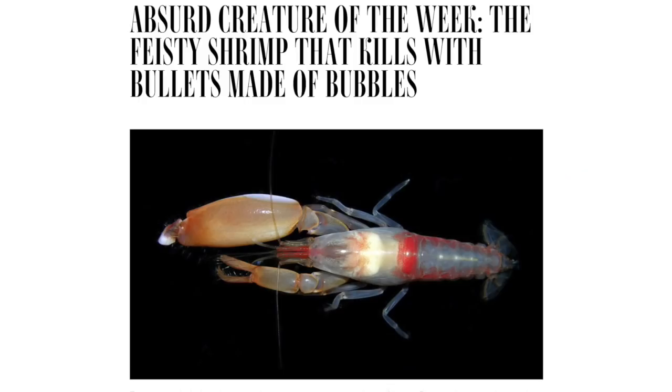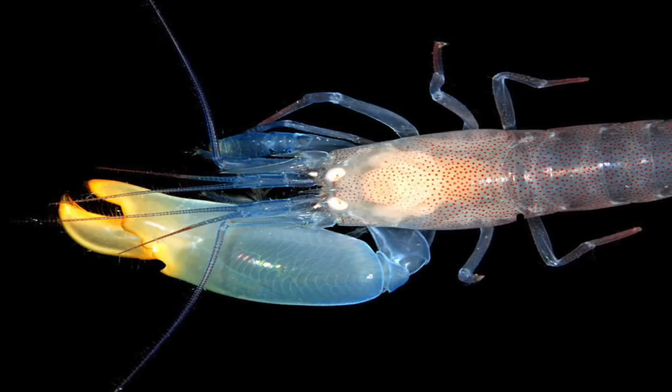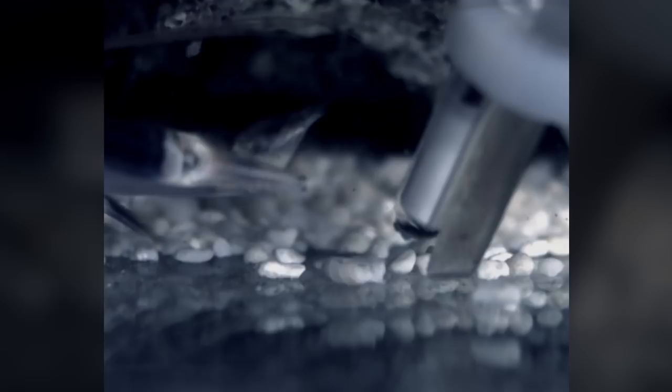An incredible example of sonoluminescence is the stun action of both the pistol and mantis shrimp. These predatory shrimp knock out their prey by loading their claws with tension and releasing it suddenly. The shrimp clamps its claws shut at such an extreme velocity that the surrounding water vaporizes.